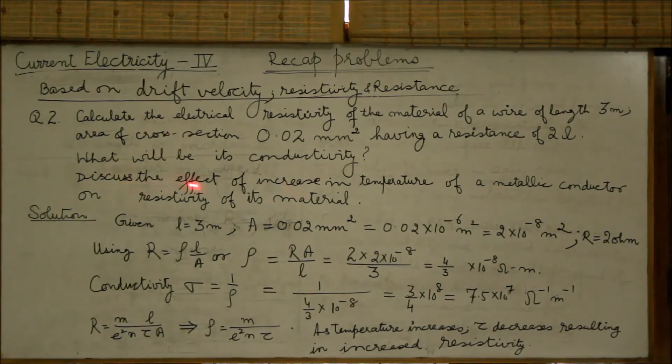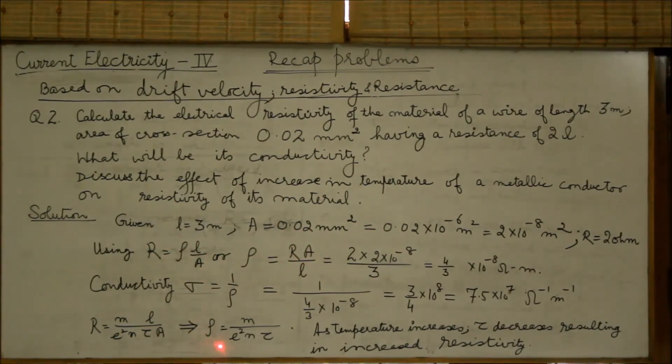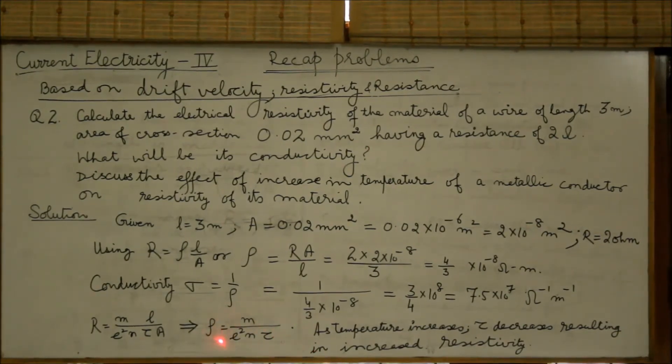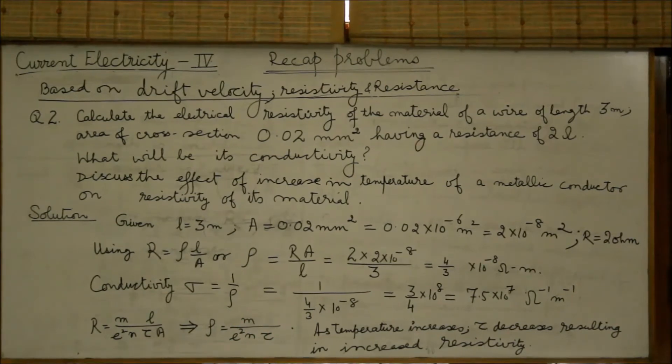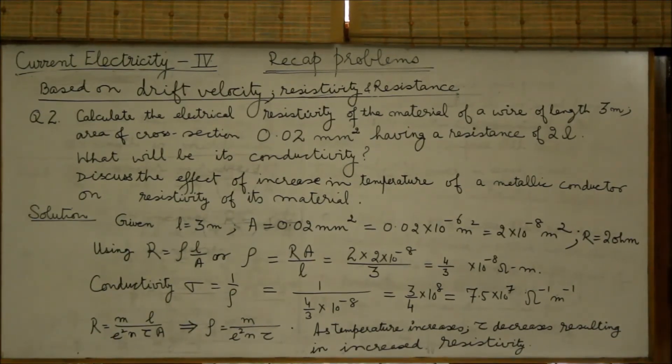For the last part, that is effect of increase in temperature on resistivity of a metallic conductor. We use the relation R equals M L over E square N A tau. Compare this relation with R equals rho L by A. You get expression for rho as M over E square N tau. Look at the right hand side of the expression. The mass and the charge on an electron, these are constant quantities. The number of free electrons per unit volume also depends on nature of the material, which is a fixed number.